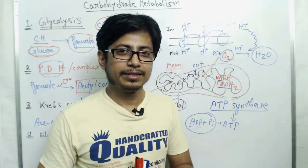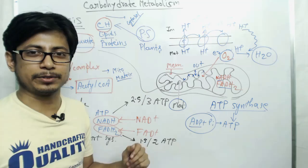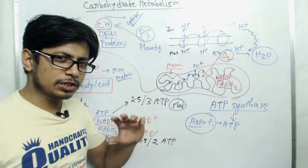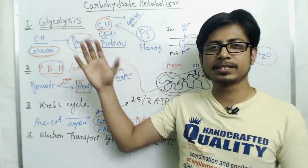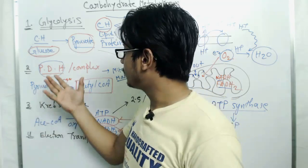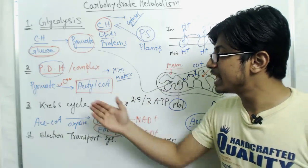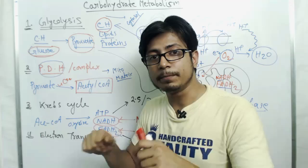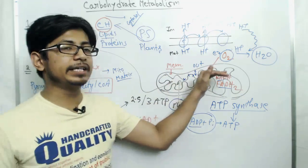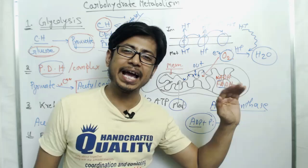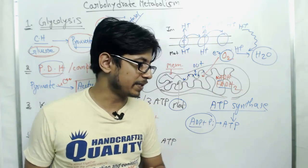For summary: glycolysis takes place in the cytosol; pyruvate dehydrogenase complex in the mitochondrial matrix; the Krebs cycle in the mitochondrial matrix; and the electron transport chain in the inner membrane of mitochondria, also involving the matrix and the intermembrane space.